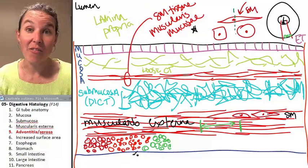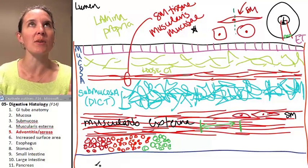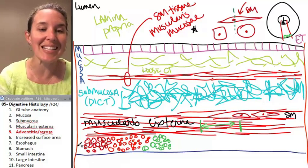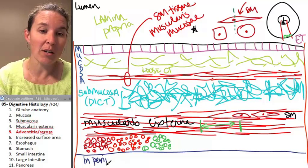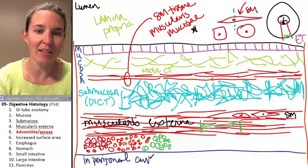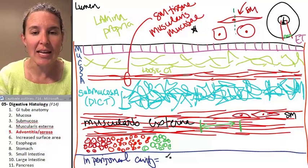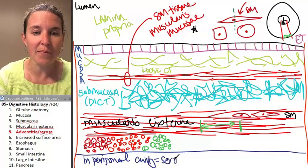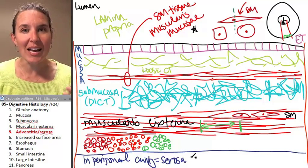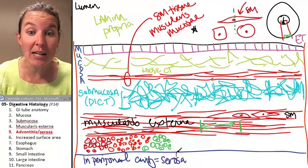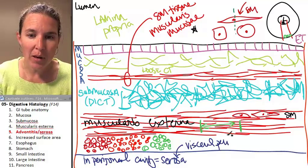And here's the deal. If the tube is in the peritoneal cavity, then this outer layer, which that literally is my layer right there, it's called the serosa. And here's the fantastic scoop. The serosa is visceral peritoneum.